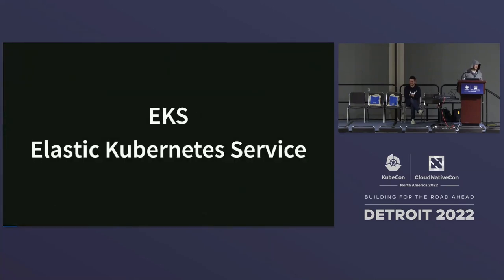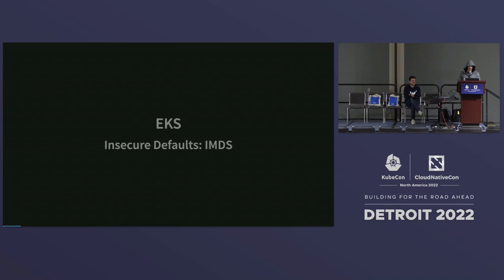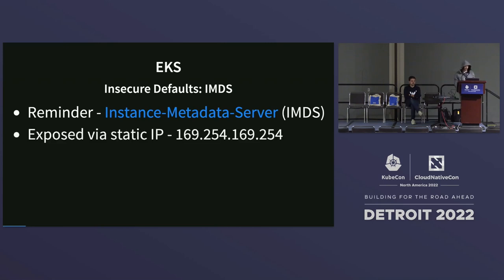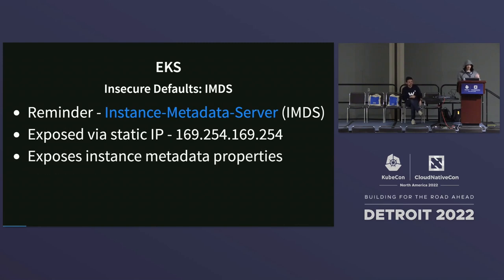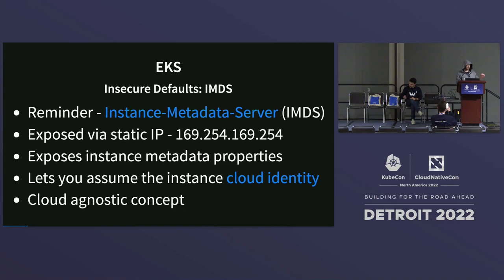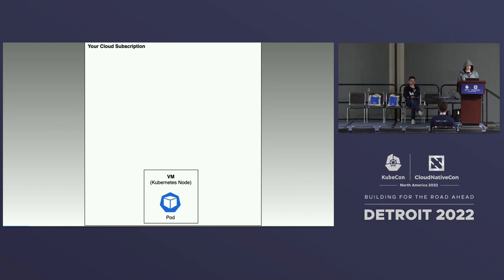The first managed solution we'll look at is EKS from Amazon. I want to remind you about the Instance Metadata Server — a service exposed via a static IP address to all EC2 instances. You can use it to query instance metadata properties like instance ID, subscription ID, vNet ID, and also to assume the instance cloud identity.